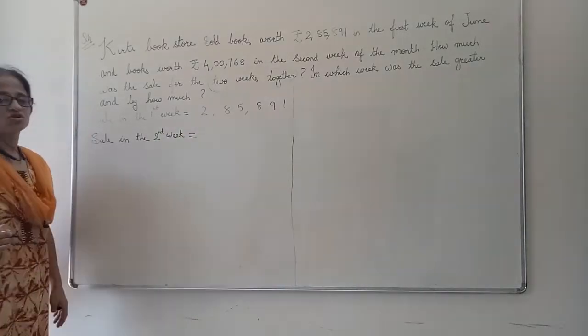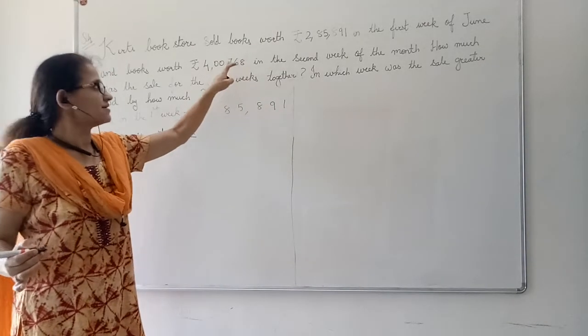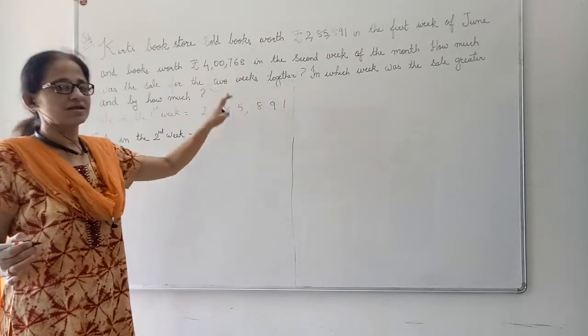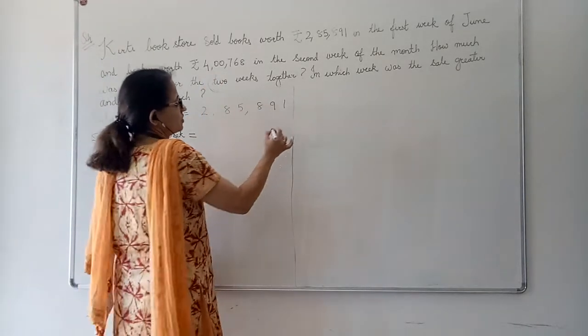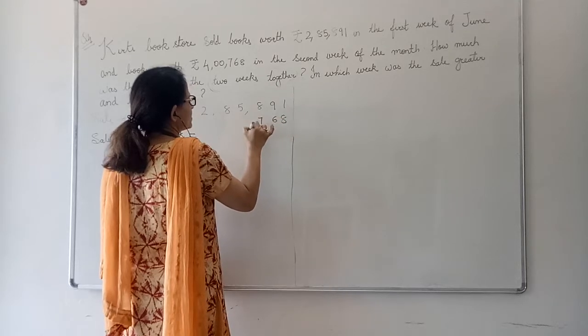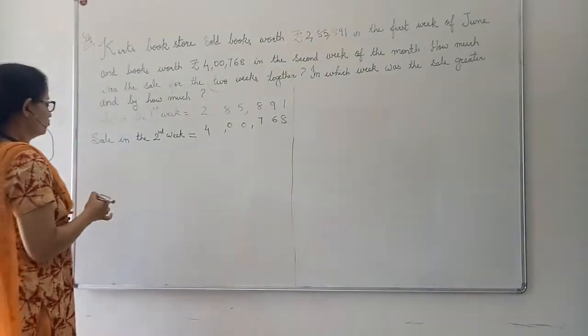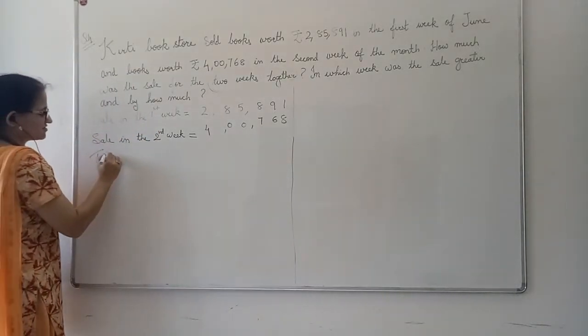Again, it is addition. So we know that 1s will come under 1s, 10s under 10s, 100s under 100s, 1000s under 1000s and so on. 4, 7, 6, 7, 6, 8. So down you will write 4, 7, 6, 7, 6, 8.